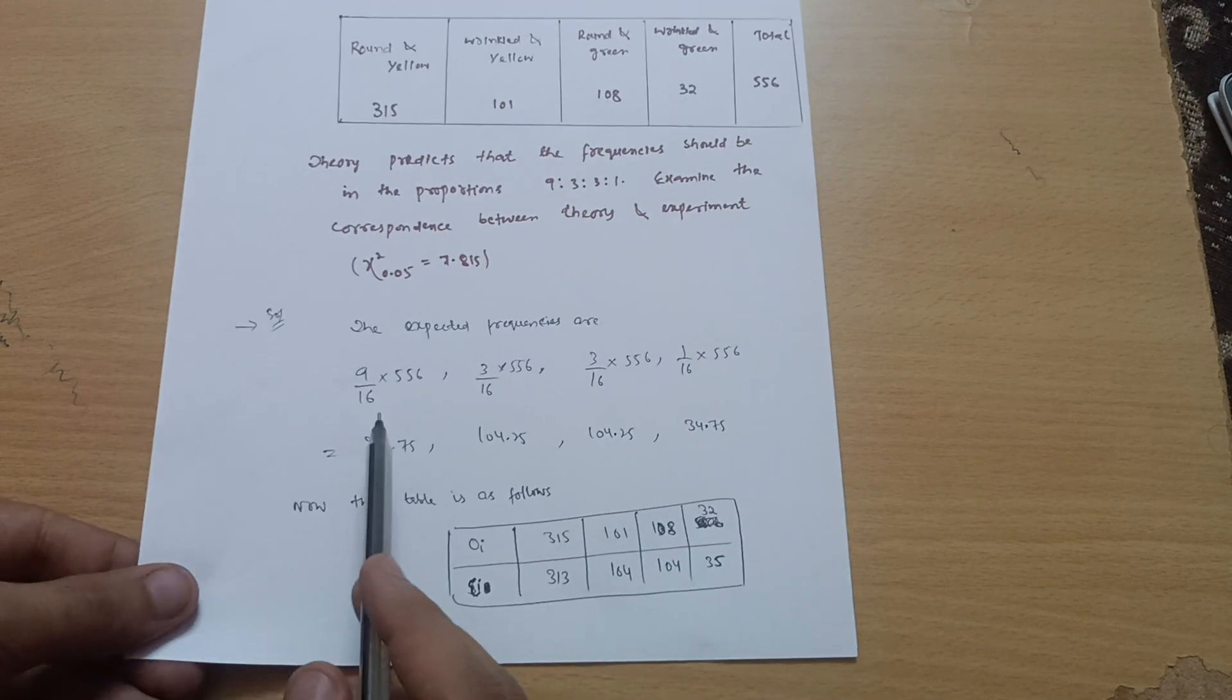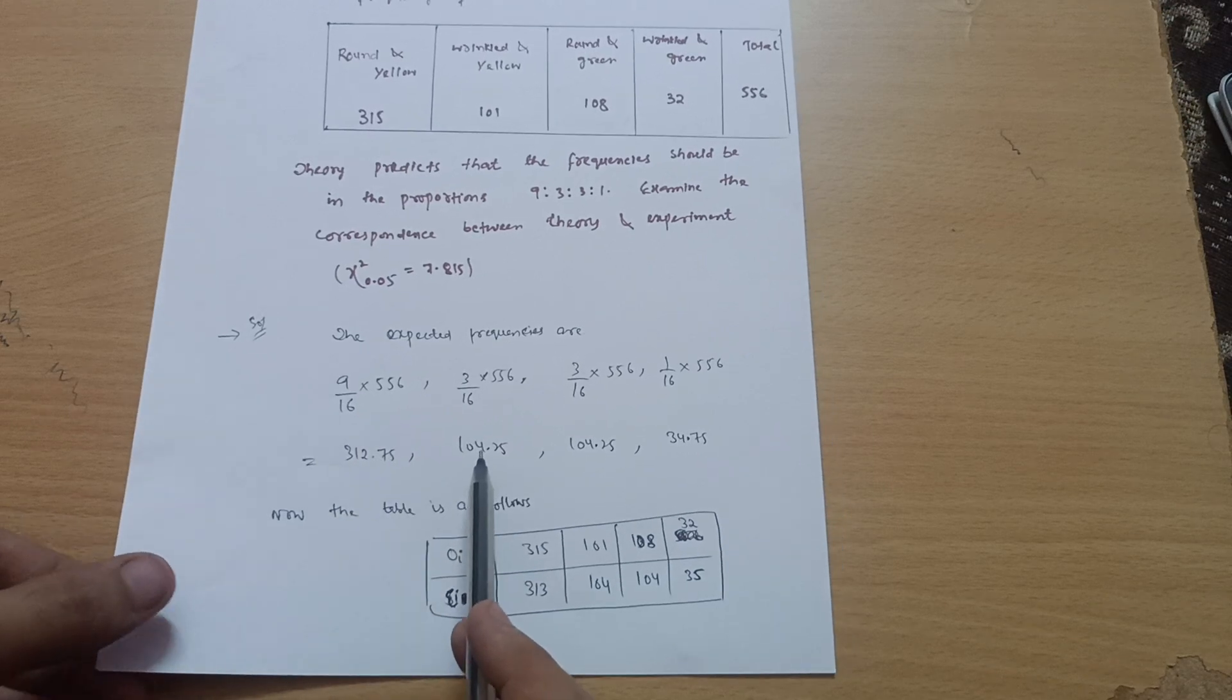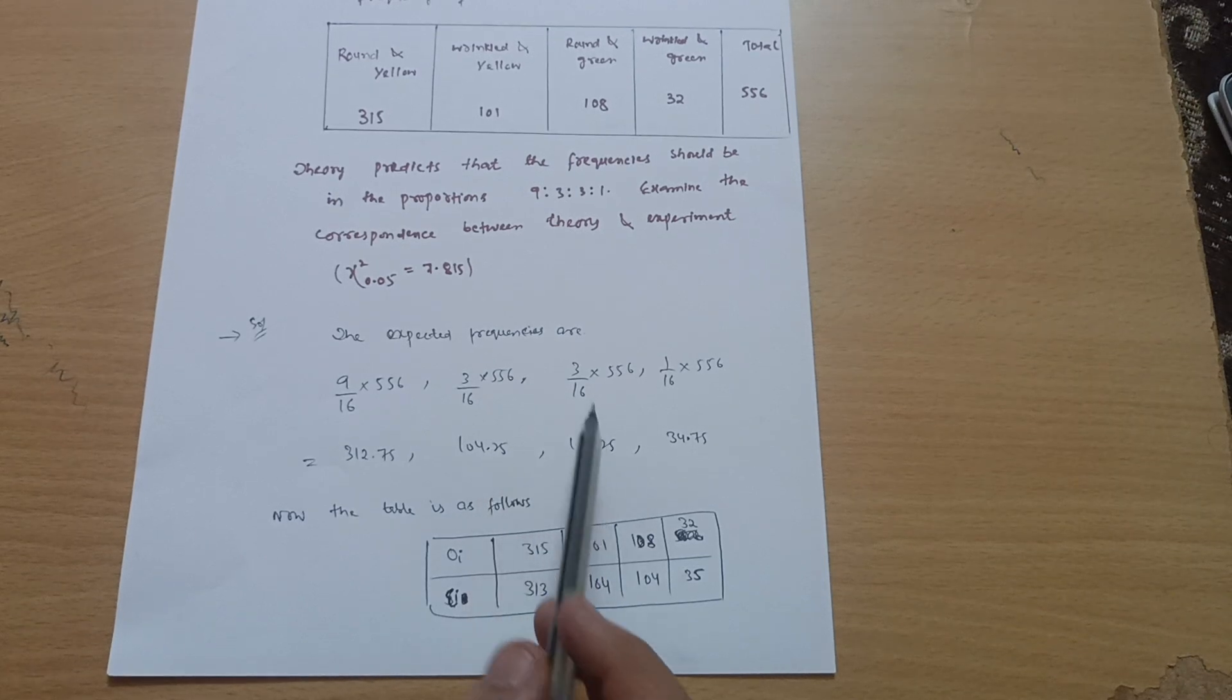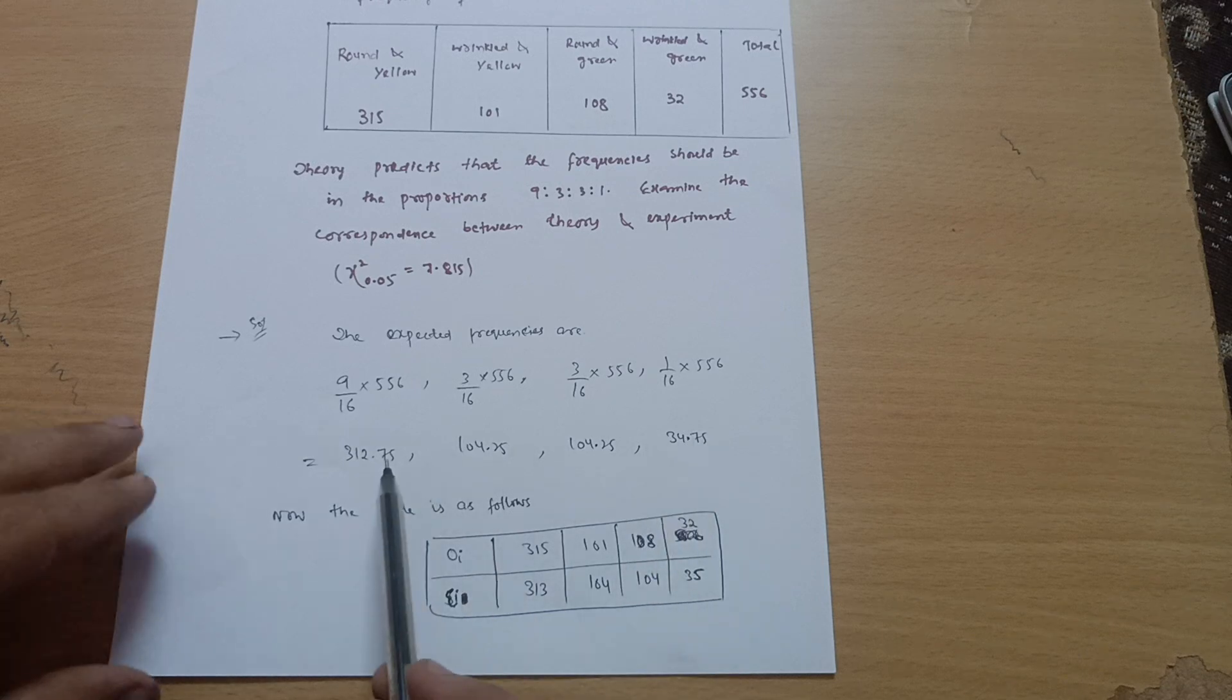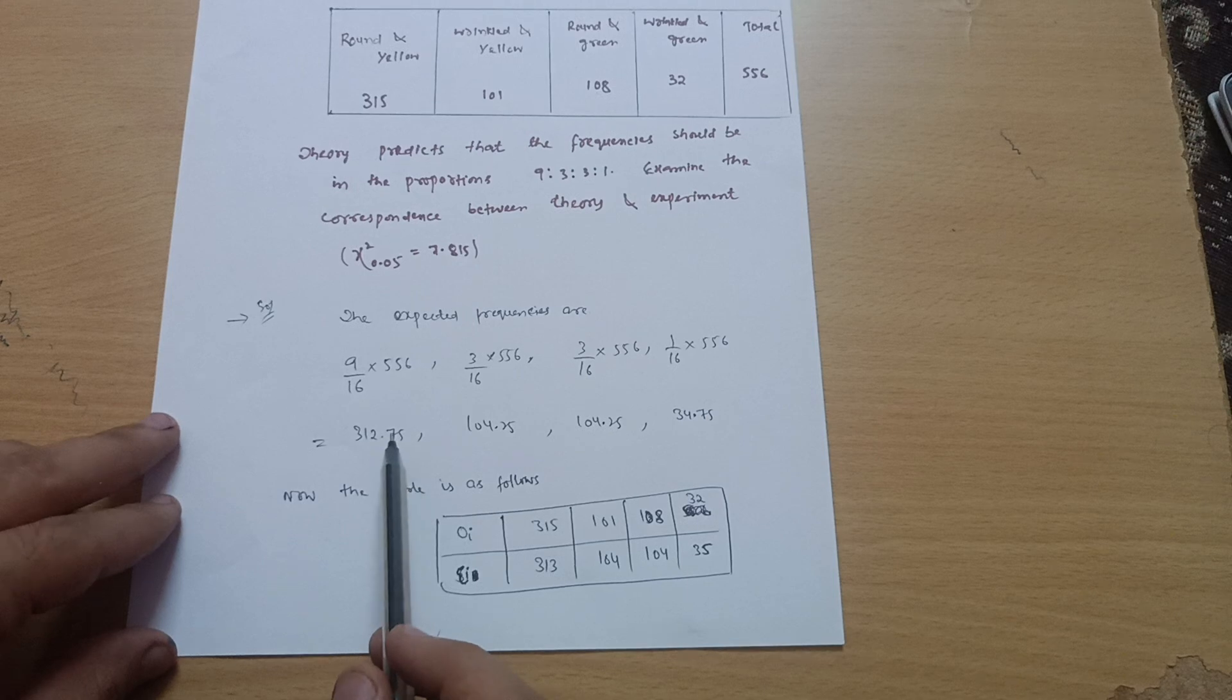So when you calculate these values you will get 312.75, and by calculating this you will get 104.25, and again 104.25, and 34.75.